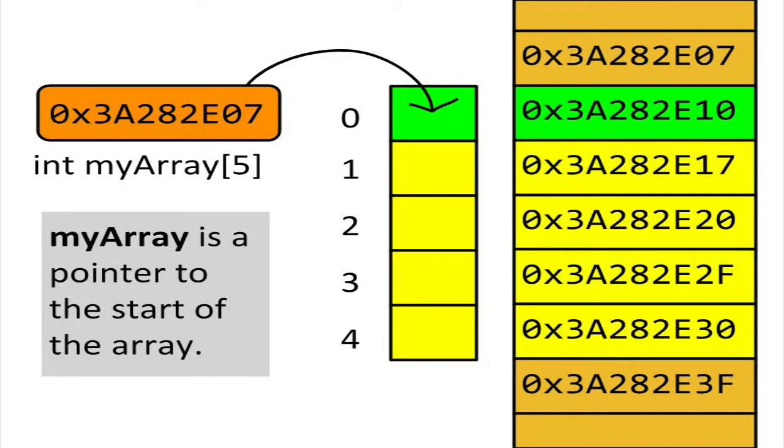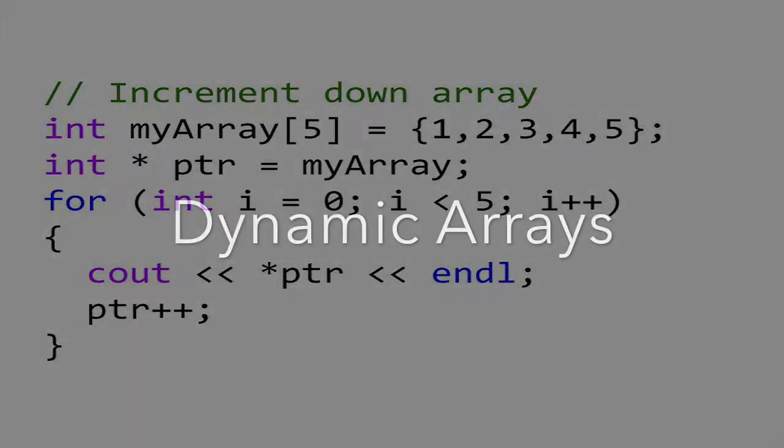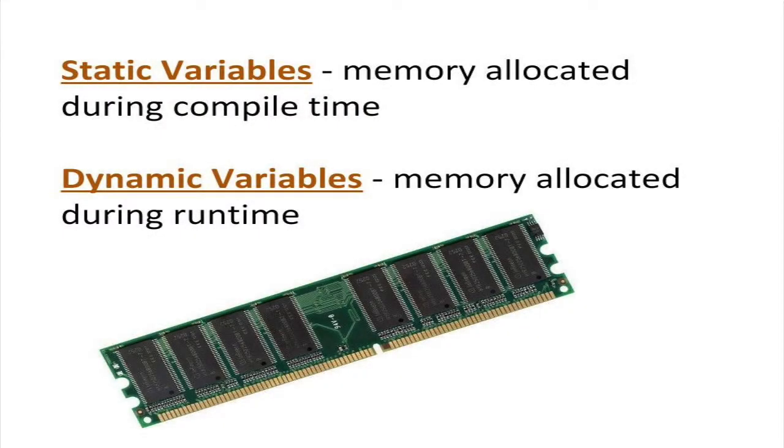Since the elements of an array are contiguous in memory, we can hop from one element to the next simply by incrementing the address to the next element in the array.